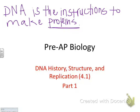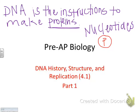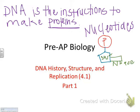So DNA is the instructions to make proteins. What's DNA made of? DNA is made up of nucleotides. A nucleotide is a phosphate, a 5-carbon sugar called deoxyribose, and a nitrogen base. Go ahead and draw that. A bunch of nucleotides make up a strand of DNA.